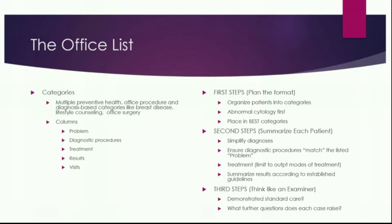The second step is to summarize each patient and really simplify the diagnosis. When someone starts a case list, everyone asks how much information to put in. You don't want a 35-page office case list — that's too much. You want to simplify the diagnosis and ensure the diagnostic procedures match the listed problem. For example, if you have postmenopausal bleeding, you'd want to include an endometrial biopsy. For treatment, limit to outpatient modes — on the office case list, I'm not going to write hysterectomy or BSO, because that patient should go on the gyne case list.